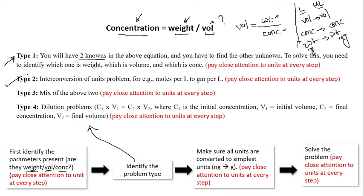Type 3 is the mix of the above two, where you have both type 1 and type 2 combined. Type 4 would be a dilution problem, which most students are familiar with: C1 V1 equals C2 V2. C1 is the initial concentration, V1 is the initial volume, C2 is the final concentration, and V2 is the final volume. These are the four types of problems.